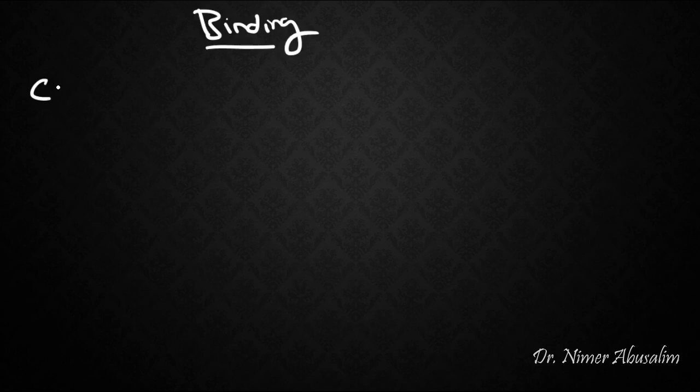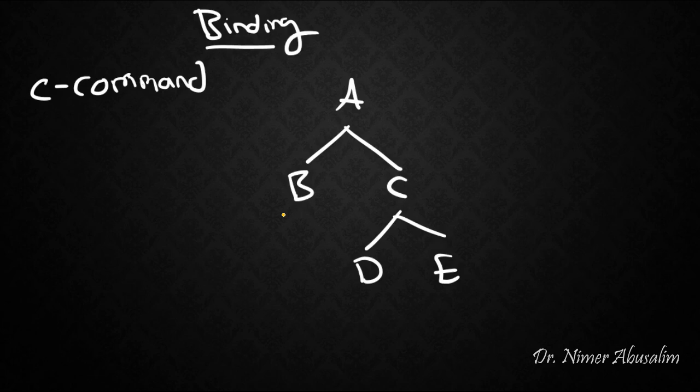Now in our previous lectures, we talked about a notion called c-command. If you recall from our previous lectures on c-command, we said B c-commands C. The reason we know that is because you can go up only once. So we get to here, to another node. That's once. Then you can go down as much as you want. So B, going up once and then down, c-commands C.